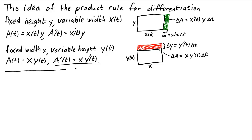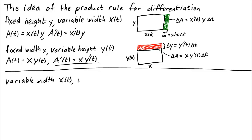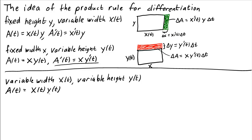These are the two easy cases. What happens when we allow both the width and the height to change as a function of time? Now the area is x of t times y of t. As before, we want to find the instantaneous change in the area — the derivative of a — in terms of the instantaneous rate of change of x, x prime of t, and y, y prime of t.